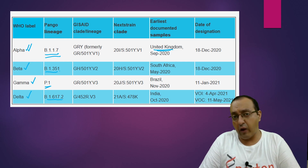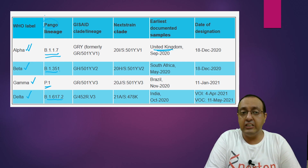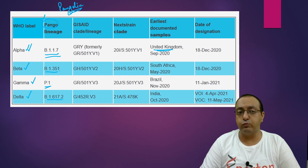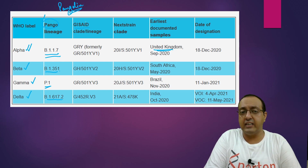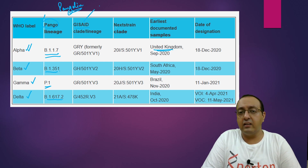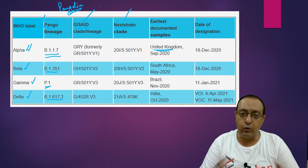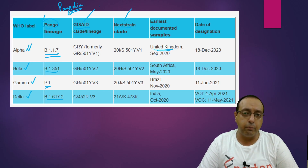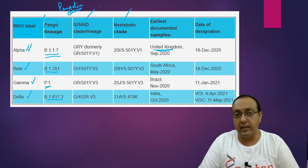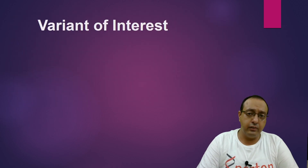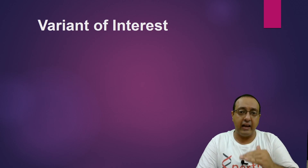There are three major agencies tracking these lineages. One is the PANGO lineage tracking agency, derived from 'pangolin,' which extensively tracks various lineages and variants — an international group of scientists. Another is GISAID, and another is NextStrain. These three organizations are extensively sequencing samples and tracking different patients to find out which variants they contain. They have agreed upon these new labels.